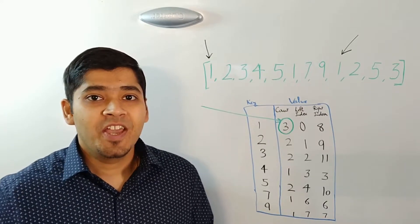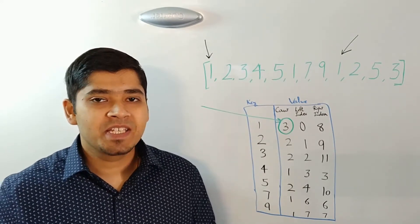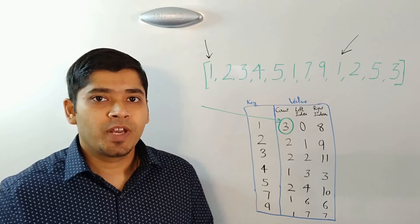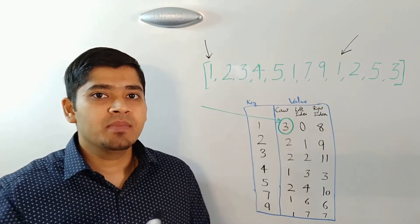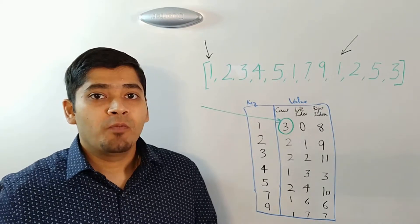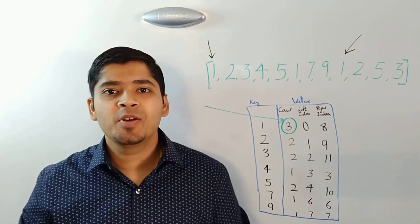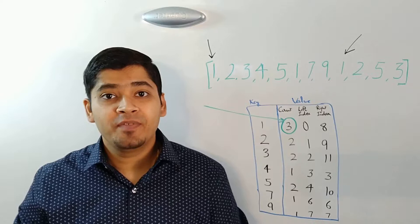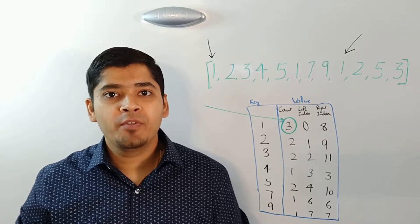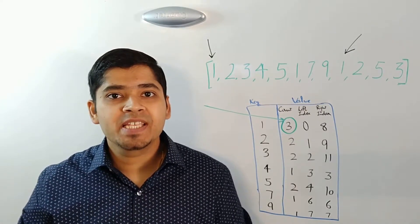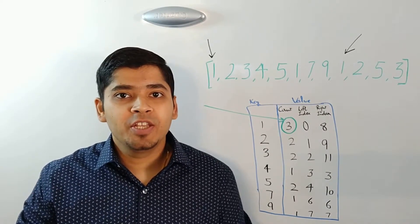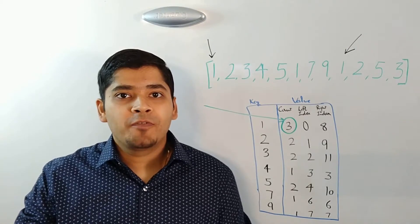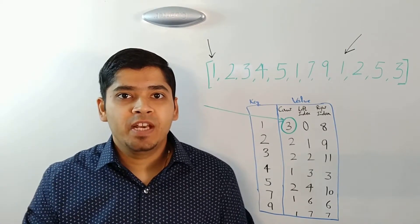Now imagine if we had multiple elements with the same count. So for example in our case if there were multiple keys with same count of 3, then what would we have done? So in case of values with same maximum count, we would have compared right index minus left index. What we want to do is we want to take the value with the minimum of right index minus left index.